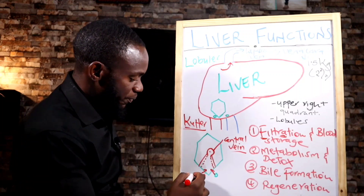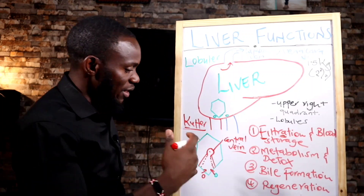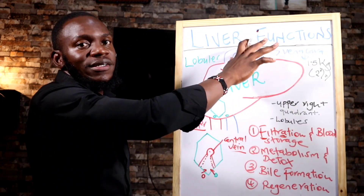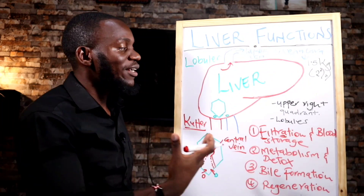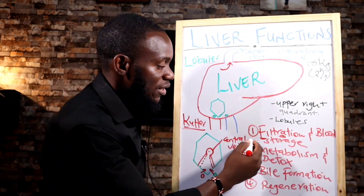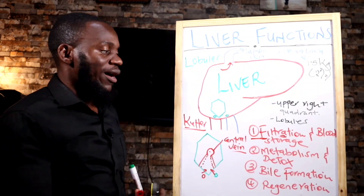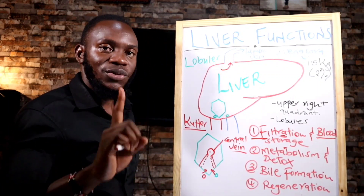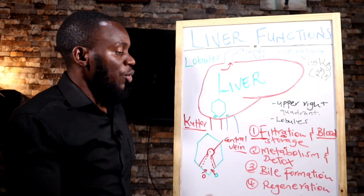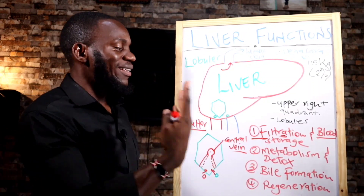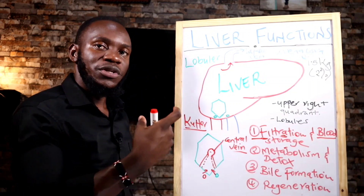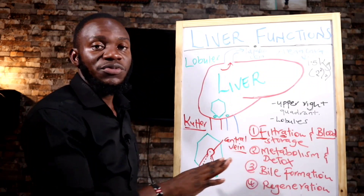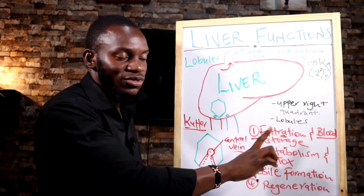That is role number one: filtration. Blood that goes through the heart is already clean and filtered by the liver. Number one function of the liver is filtration and storage of blood. We will divide liver functions into four major groups with subunits. The first role is filtration and blood storage.